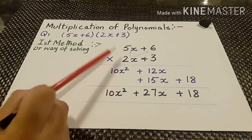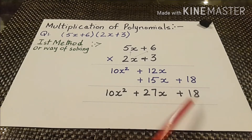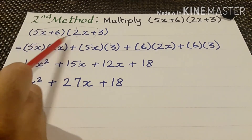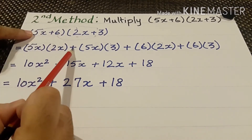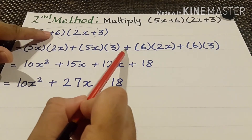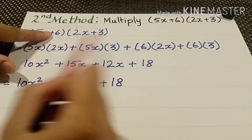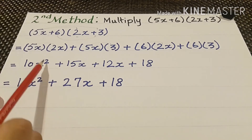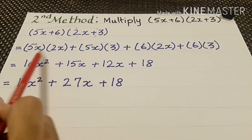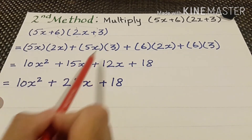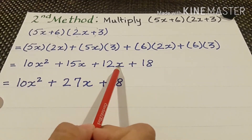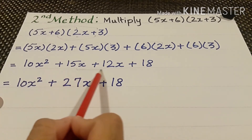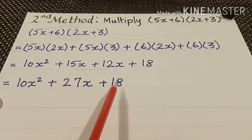We get 10x squared plus 27x plus 18. The second method of multiplication is also very simple. We write the values horizontally: 5x is multiplied by 2x, then 5x multiplied by 3, then 6 multiplied by 2x, then 6 multiplied by 3. So: 5 times 2 is 10, x times x gives x squared; plus 15x; plus 12x; plus 18. Adding the x terms: 10x squared plus 27x plus 18.